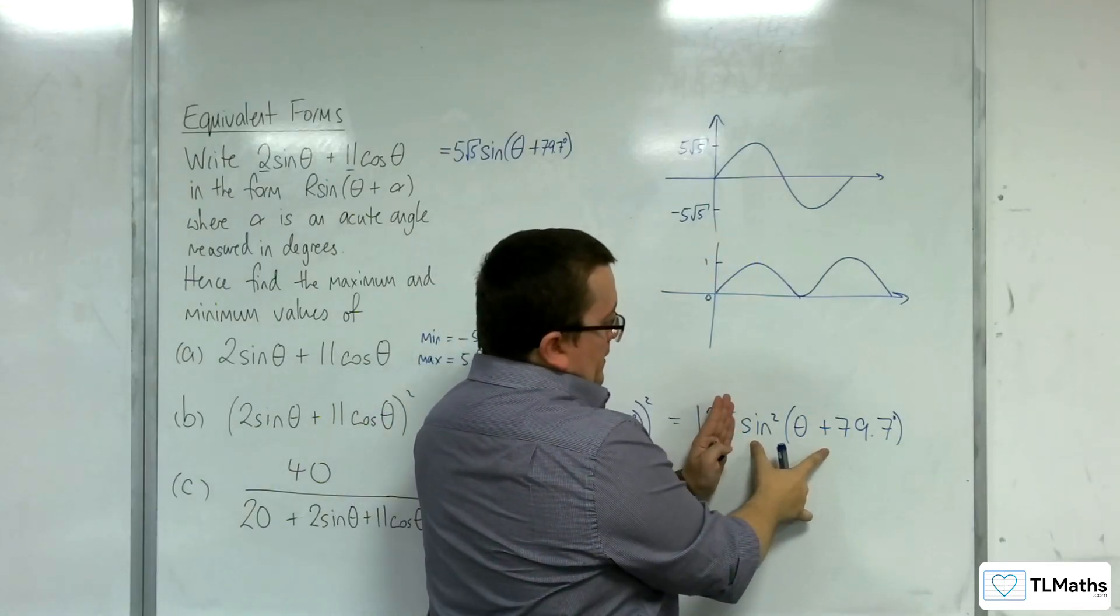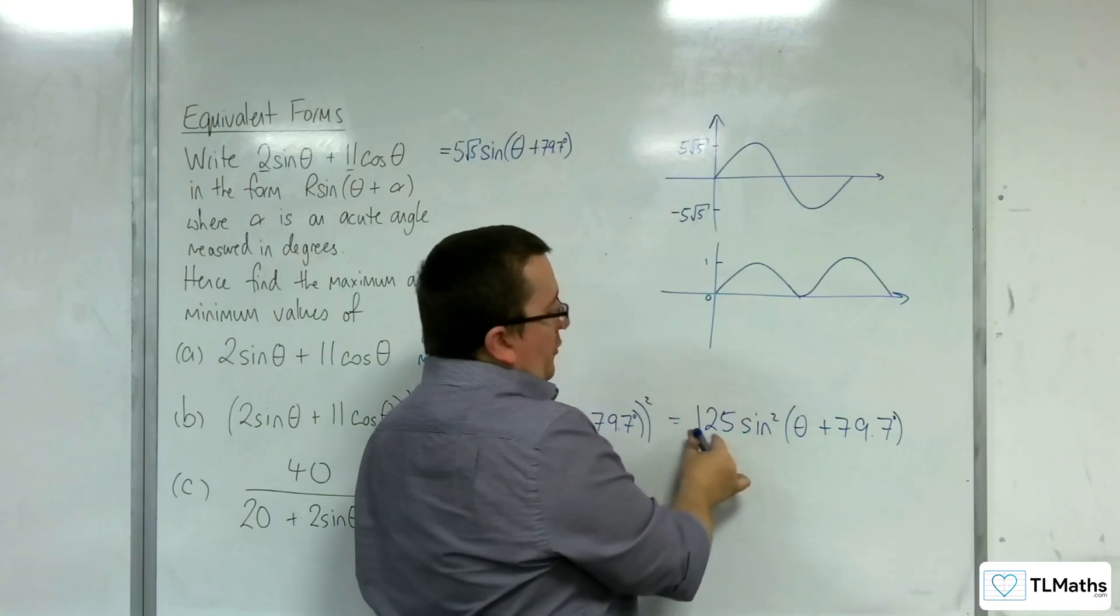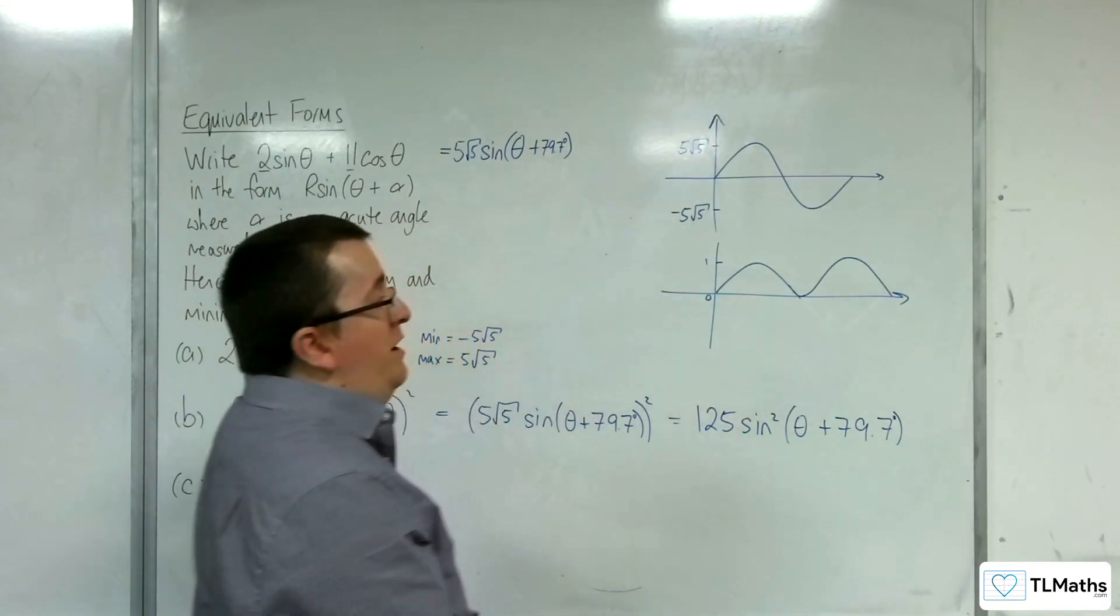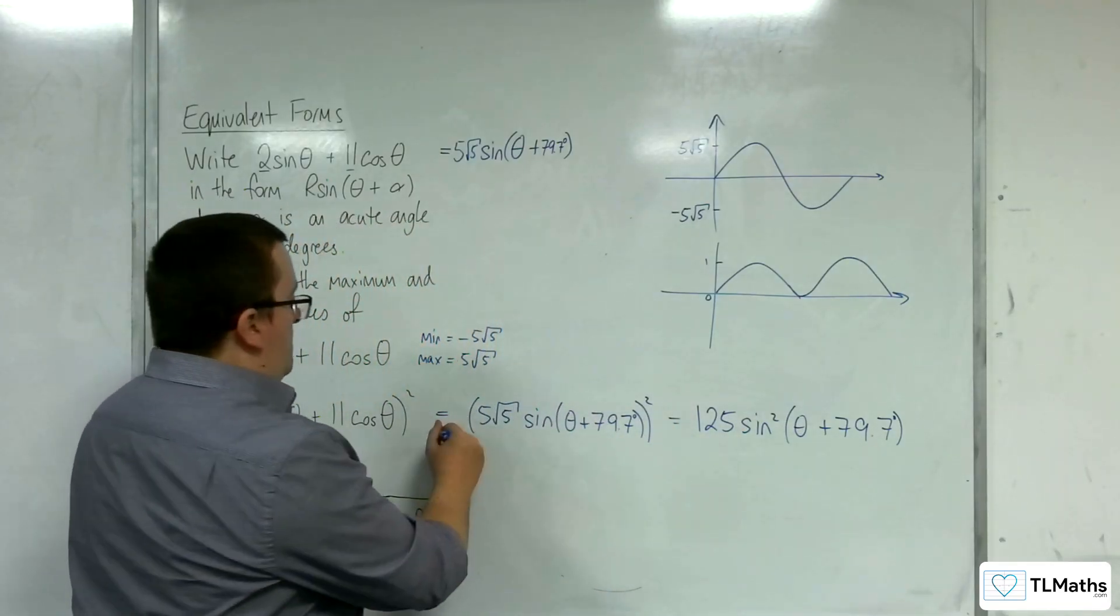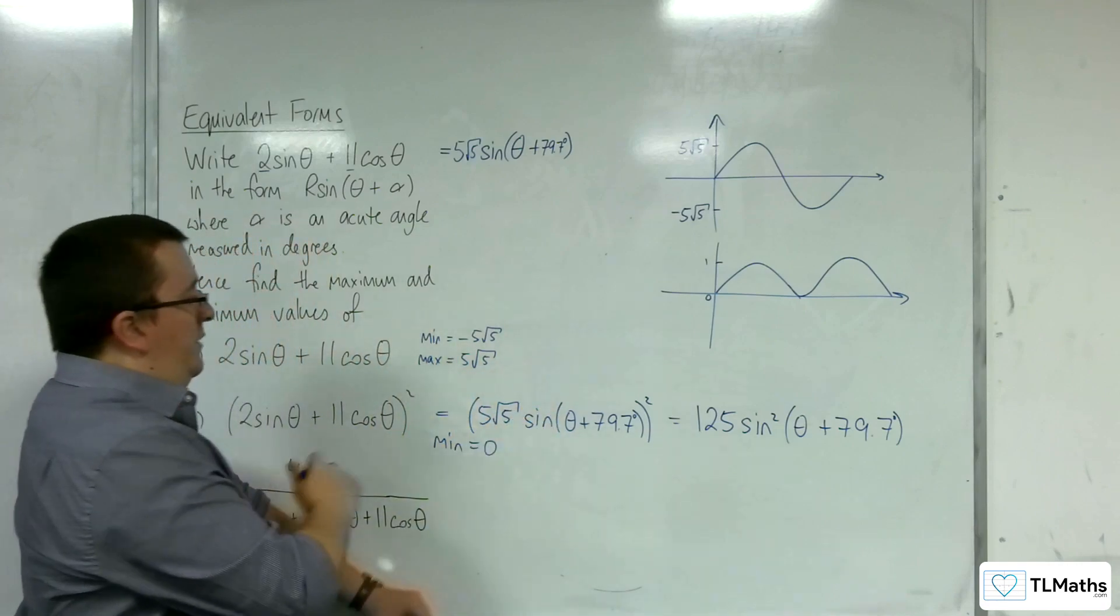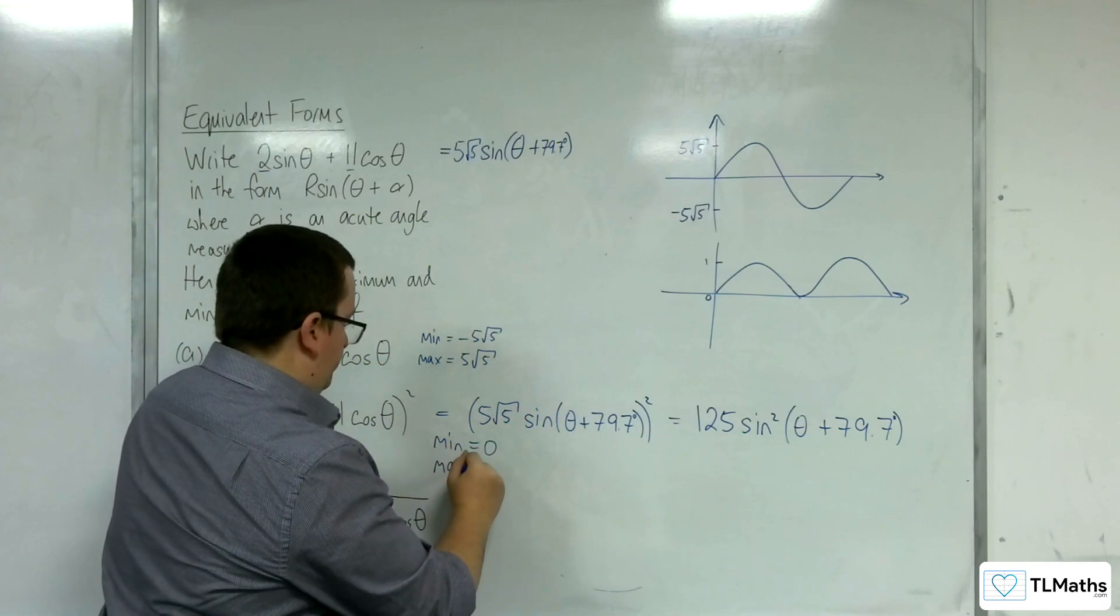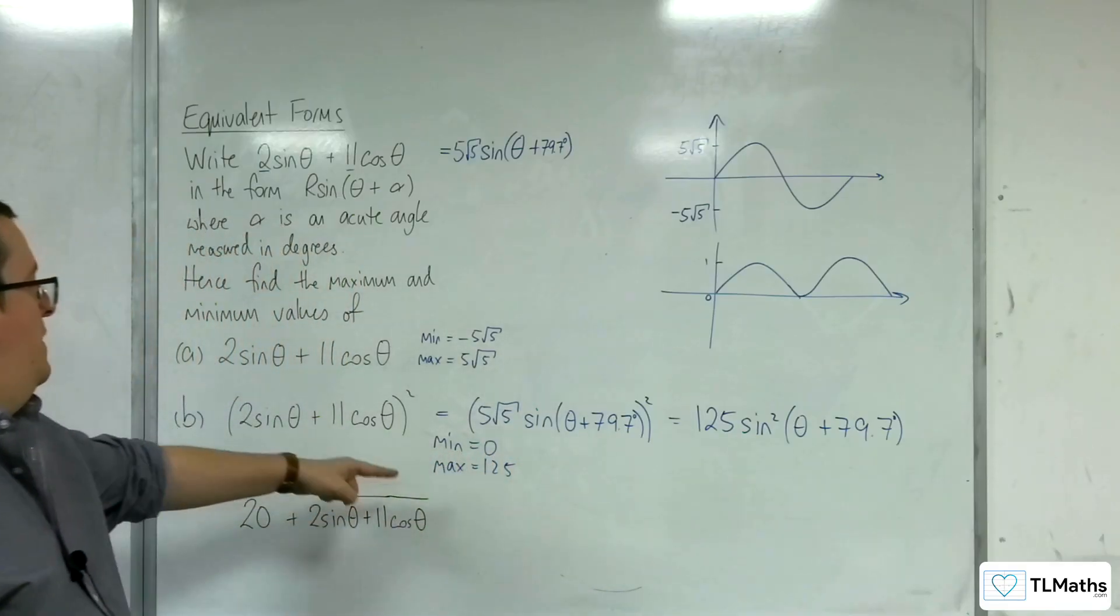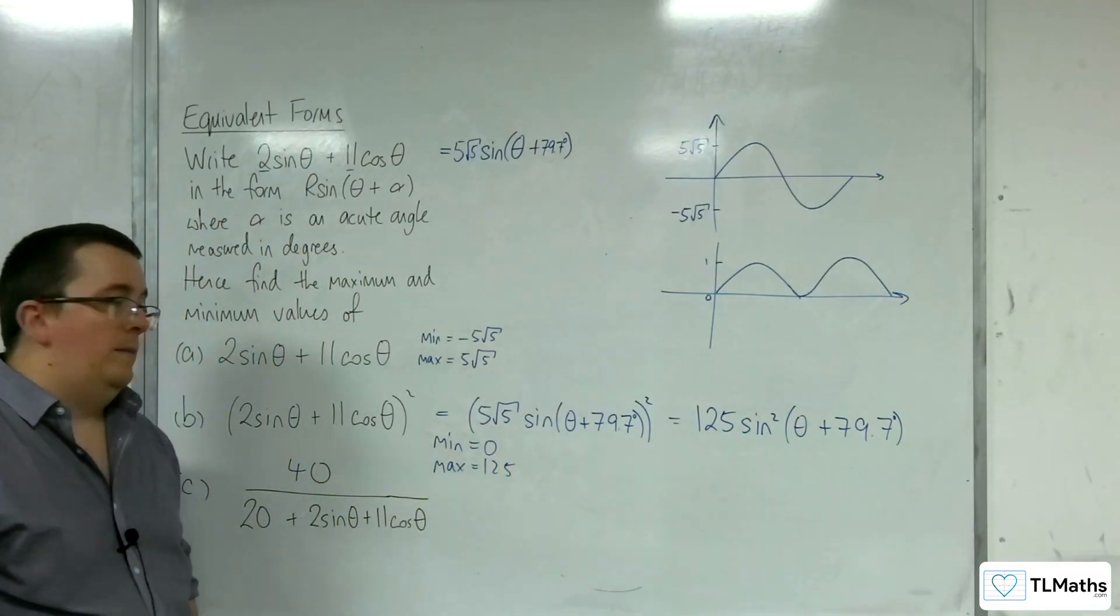So this is actually going between 0 and 1. The sine squared. And then when you're multiplying it by 125, that means that the minimum will still be 0, but the maximum will be 125. So the minimum is 0, and the max is 125 for part b.